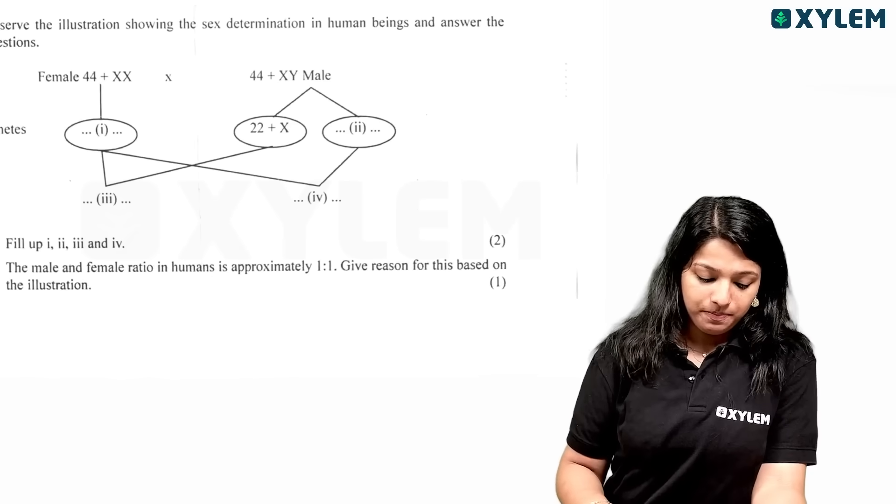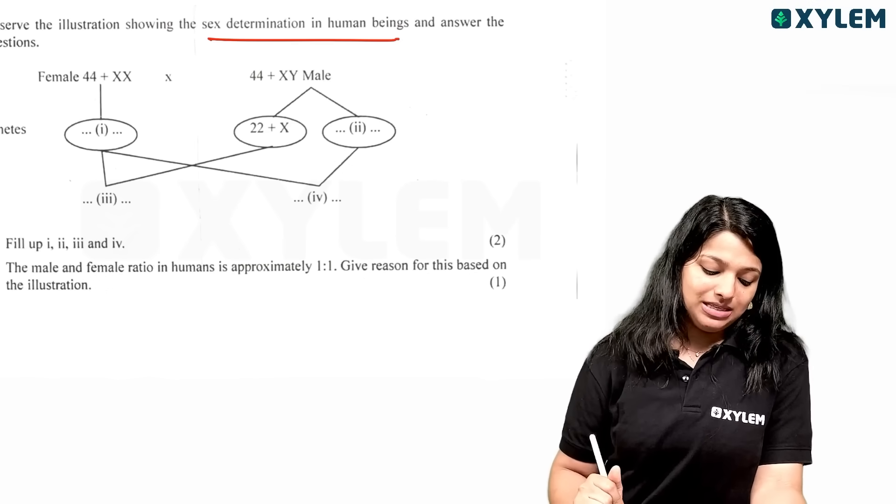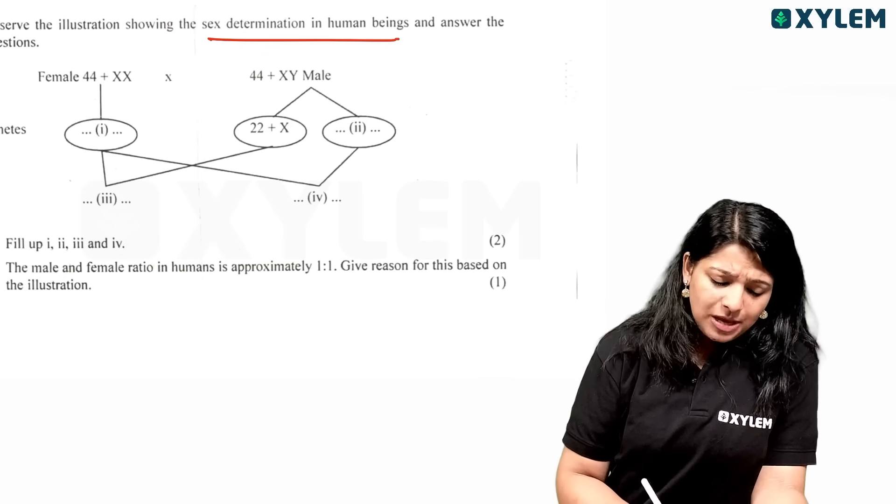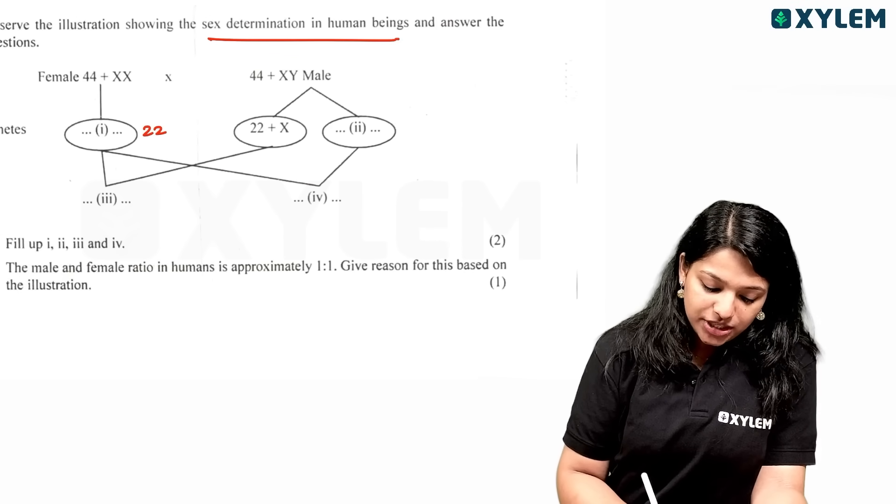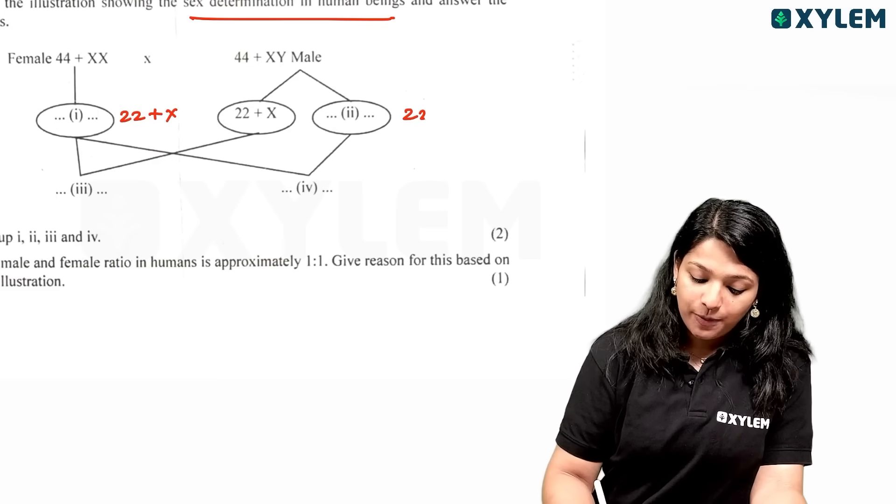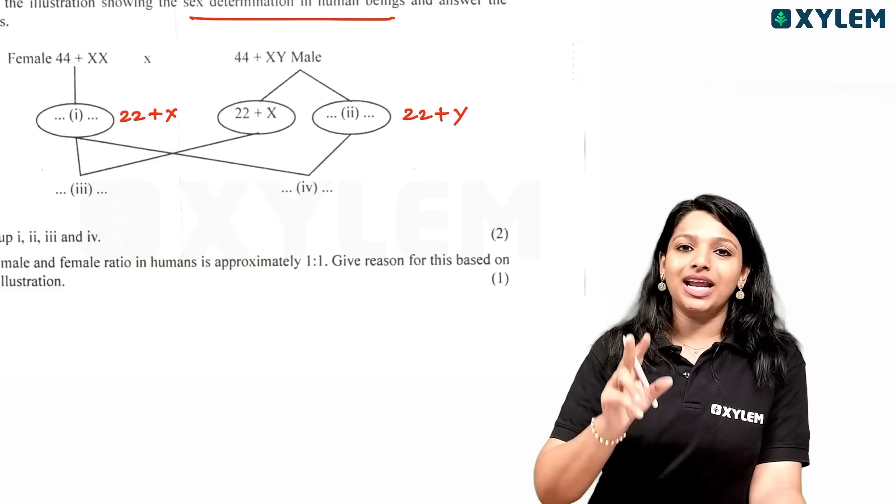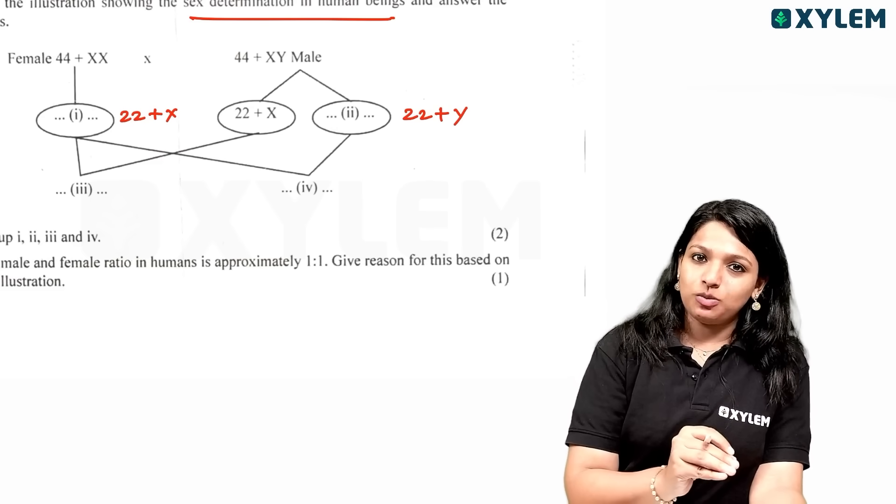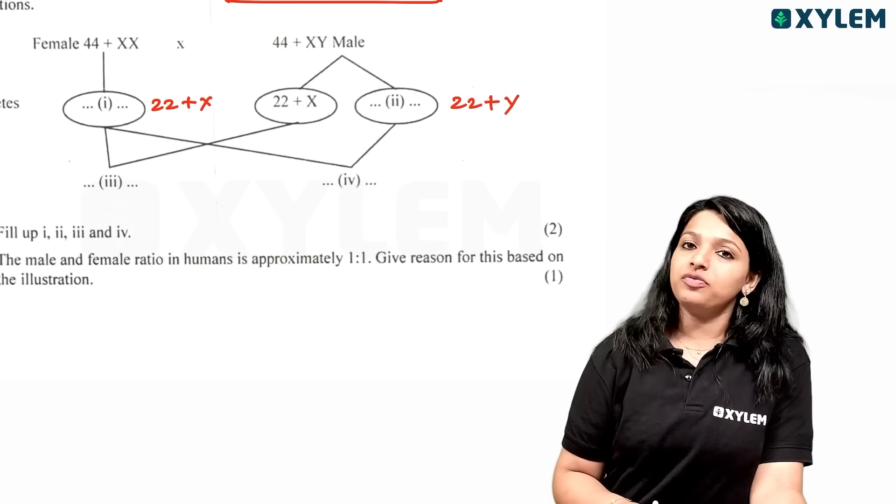Observe the illustration showing sex determination in human beings. Female is 44 plus XX. The gamete is 22 plus X. Male is 44 plus XY. The gametes are 22 plus X and 22 plus Y.